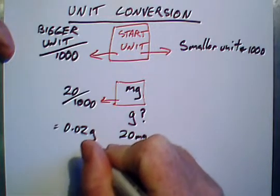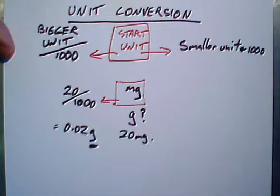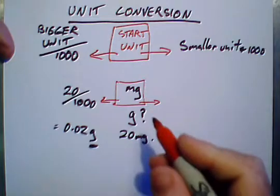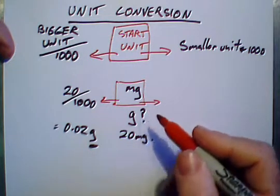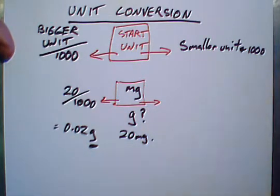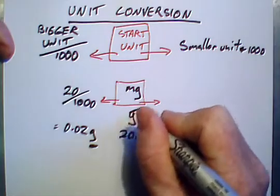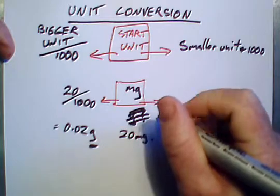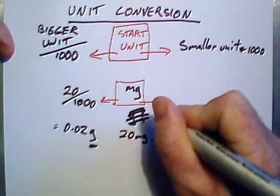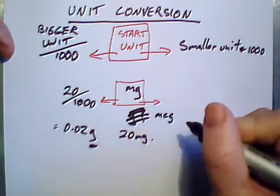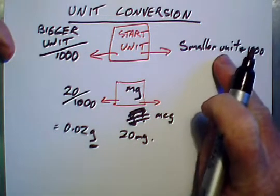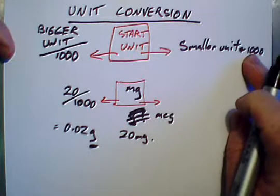Always, always, always have your units. Let's say we're going to go in the other direction. We have 20 milligrams, and we're wanting to convert that to a smaller unit. So in this case, we're converting over to micrograms from milligrams. So we're converting to a smaller unit, so we multiply by 1,000.